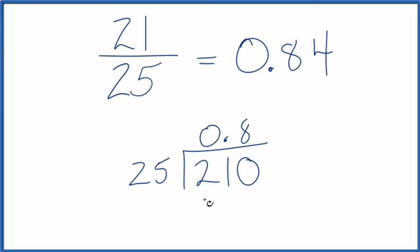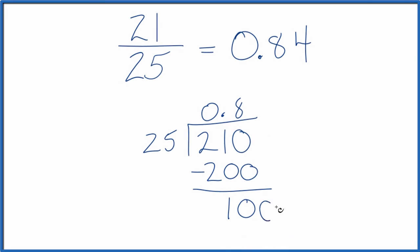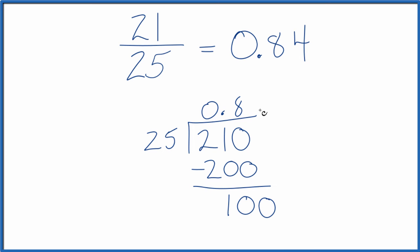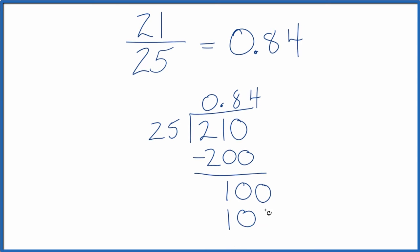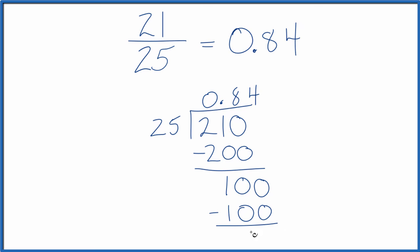Eight times 25, that's 200. So 210 minus 200, that's just 10. So let's make this 100, then we'll move over one. And four times 25, that's 100. We subtract, we get remainder of zero.